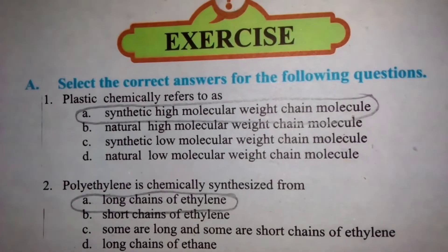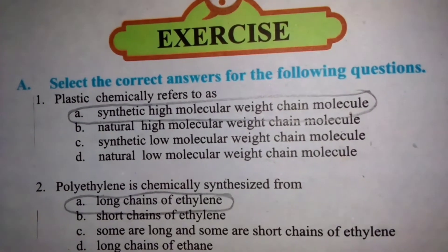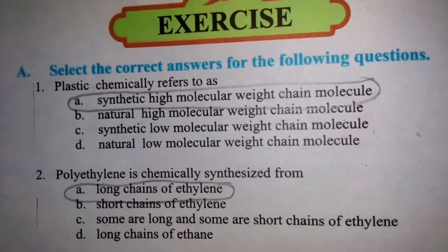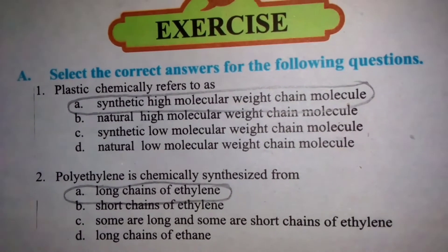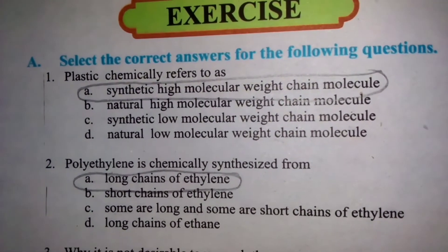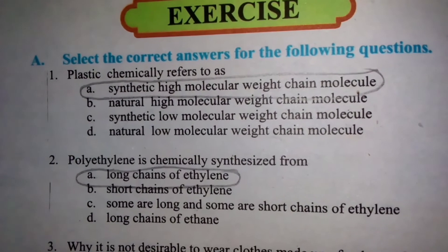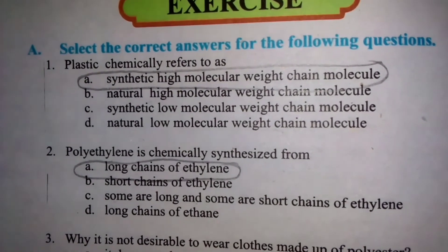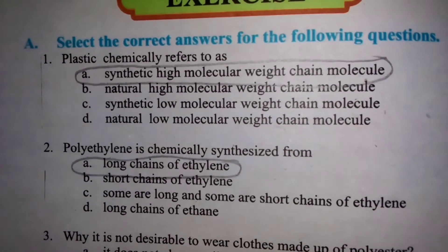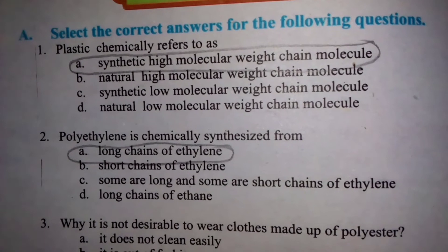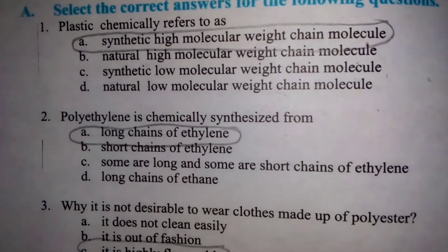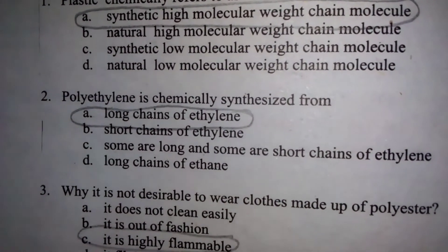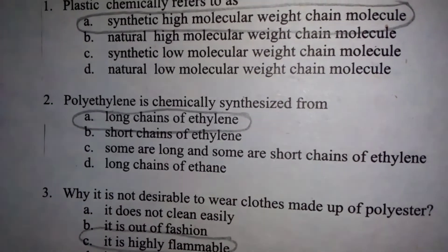Chapter 2: Plastic chemically refers to synthetic high molecular weight chain molecules. پلاسٹک chemically synthetic high molecular weight chain molecules ہوتے ہیں۔ Polyethylene is chemically synthesized from long chains of ethylene.